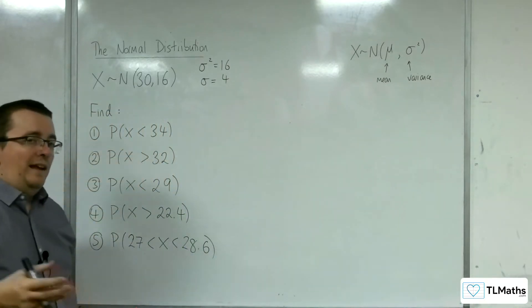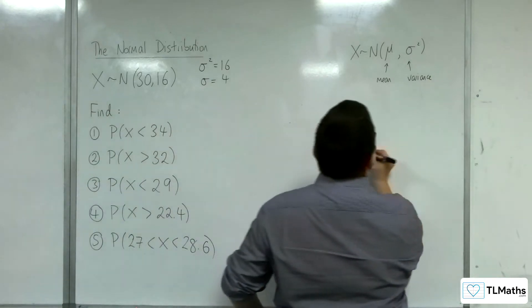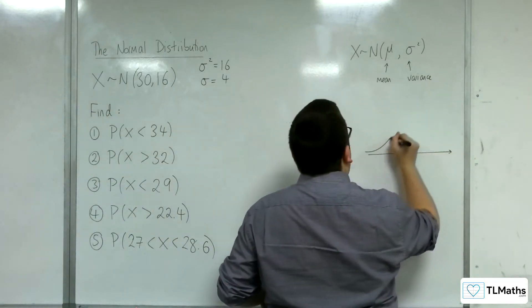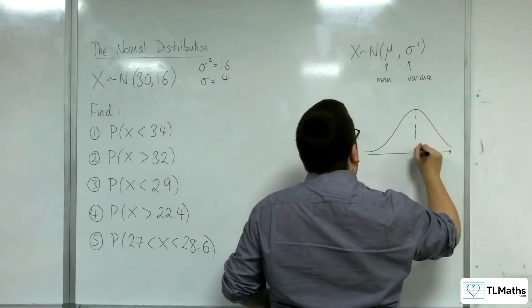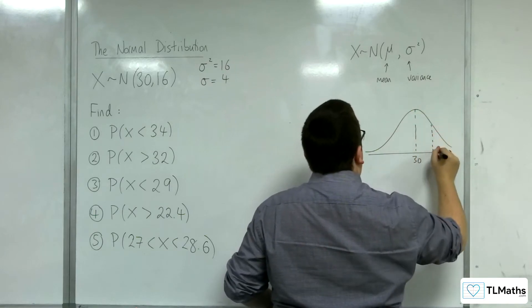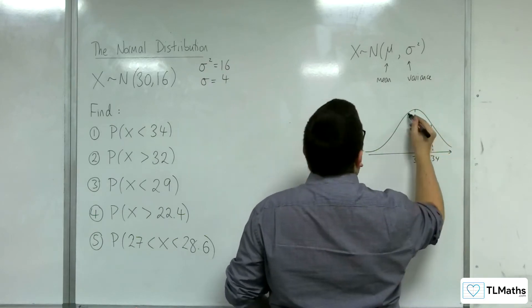Okay, so number 1, probability of X being less than 34. So a quick diagram just to make sure that we're visualizing this correctly. So the mean is 30, there's 34, it's probability of less than that.